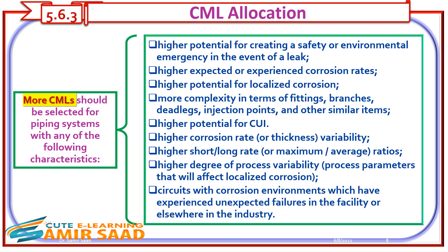More CMLs should be selected for piping systems with any of the following characteristics: higher potential for creating a safety or environmental emergency in the event of a leak; higher expected or experienced corrosion rates; higher potential for localized corrosion; more complexity in terms of fittings, branches, deadlegs, injection points, and other similar items; higher potential for CUI; higher corrosion rate or thickness variability; higher short-to-long rate or maximum-to-average ratios; higher degree of process variability; and process parameters that will affect localized corrosion.